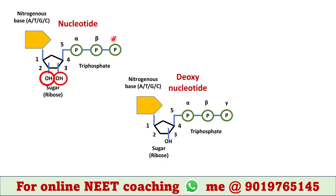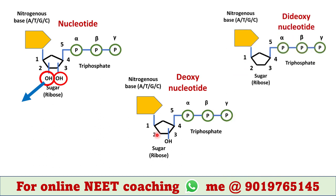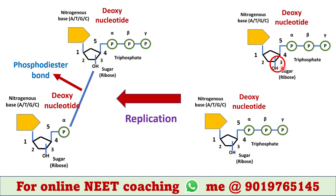It is called a deoxynucleotide because the hydroxyl group at the 2' position of the sugar is removed. When the hydroxyl groups of both the 2' and 3' positions are removed, it is called a dideoxynucleotide — 'di' means two.